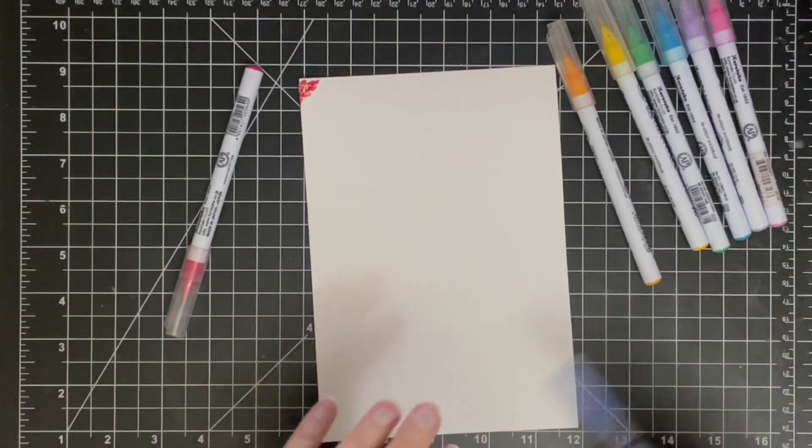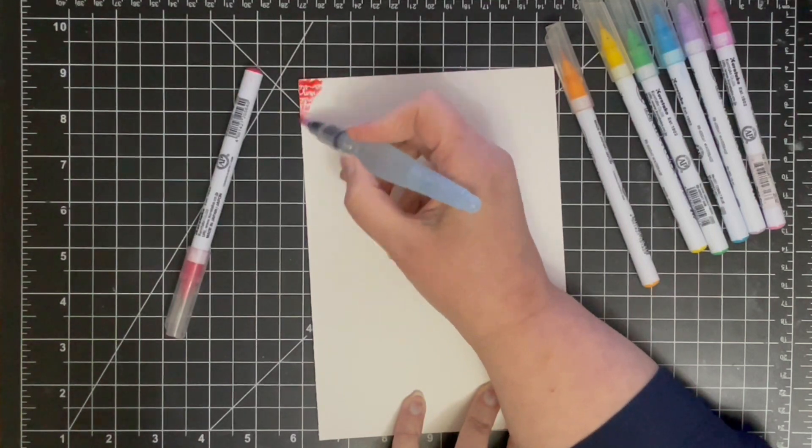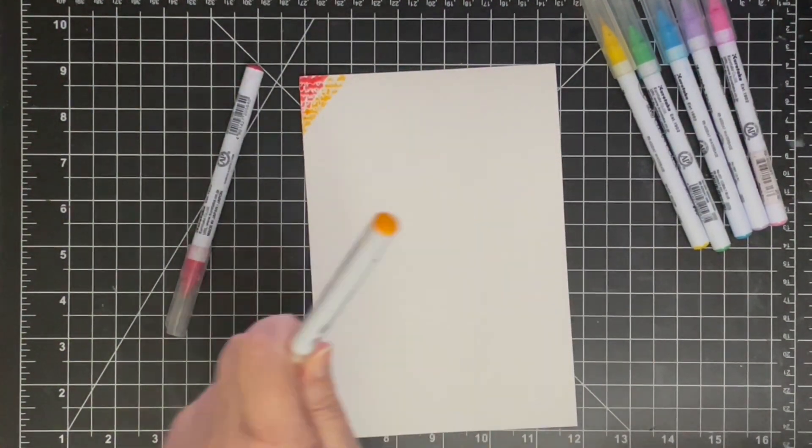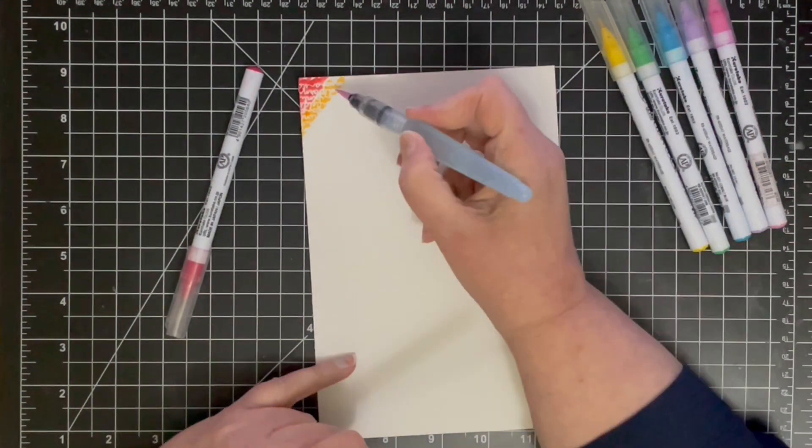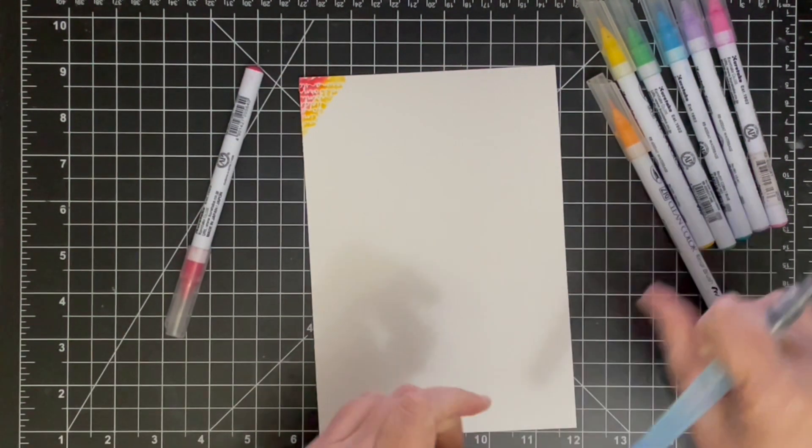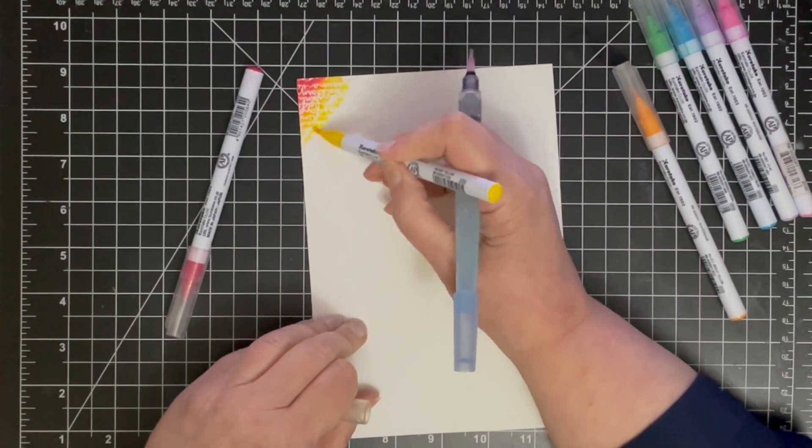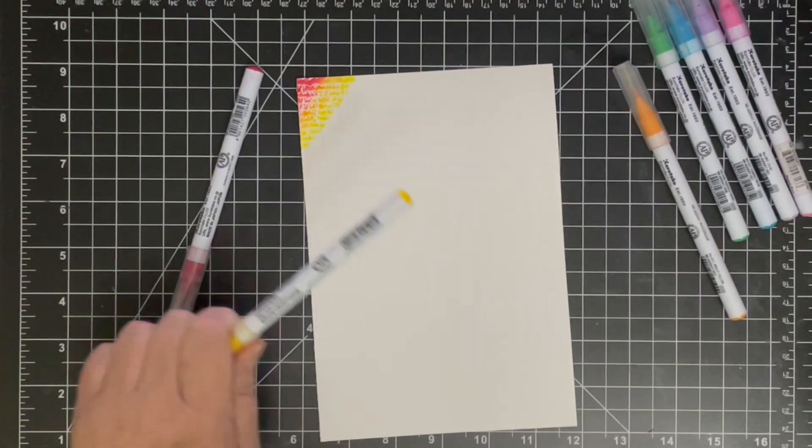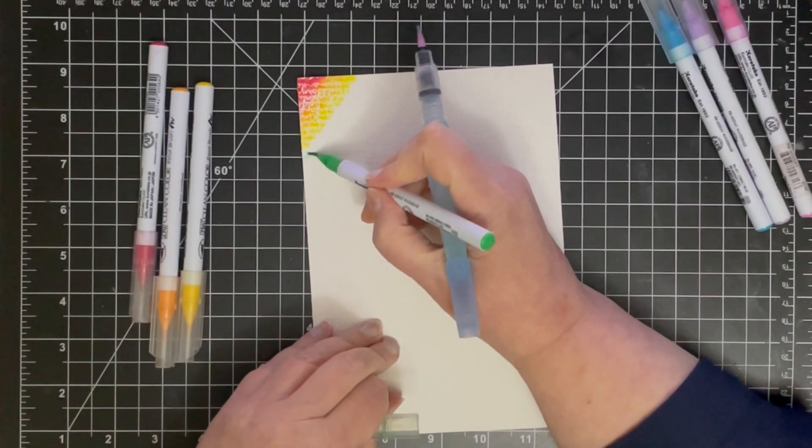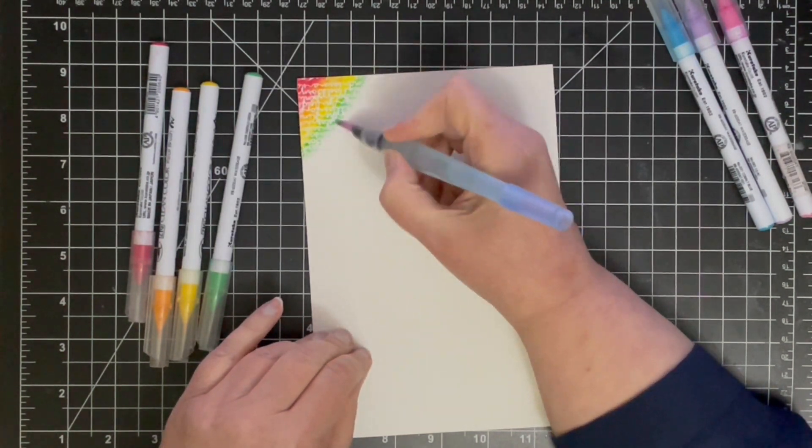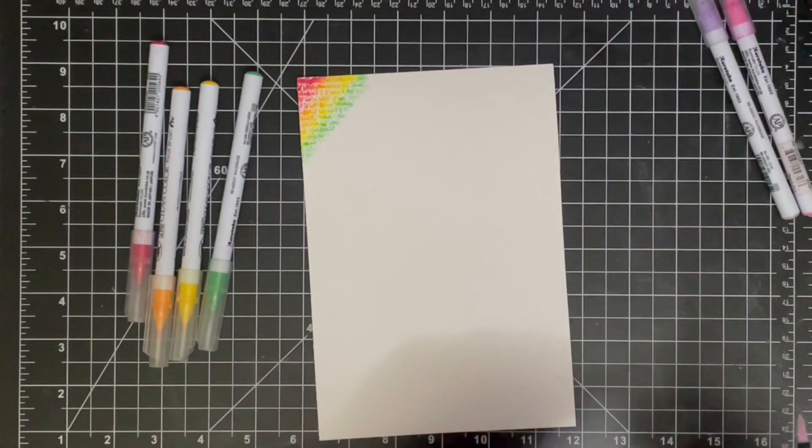So I've got some Zig markers here in a rainbow of colors, and you can see I'm just creating some relatively thin stripes of color and then coming in with my water brush to just spread out that color a little bit and get a little bit of a blend between the color that I'm adding and the color that was previously there.